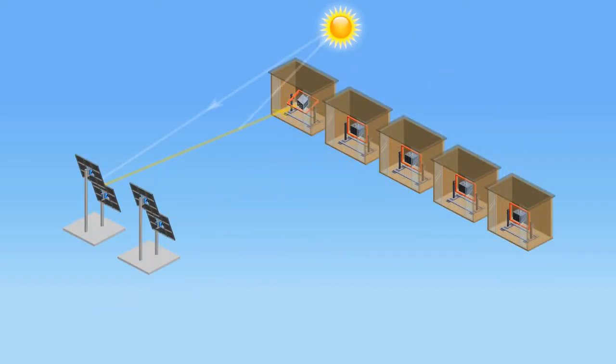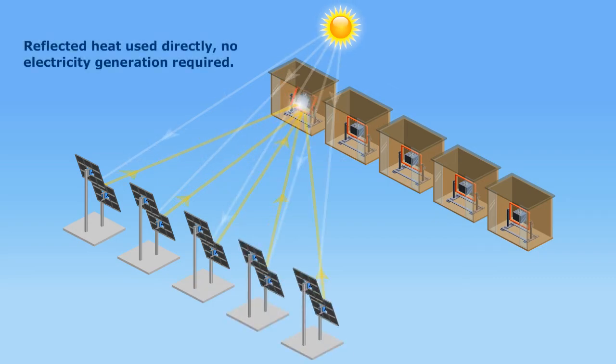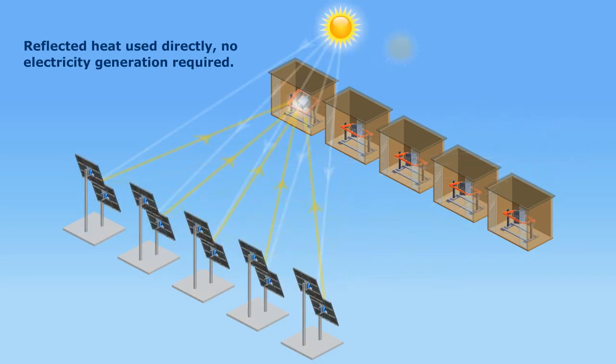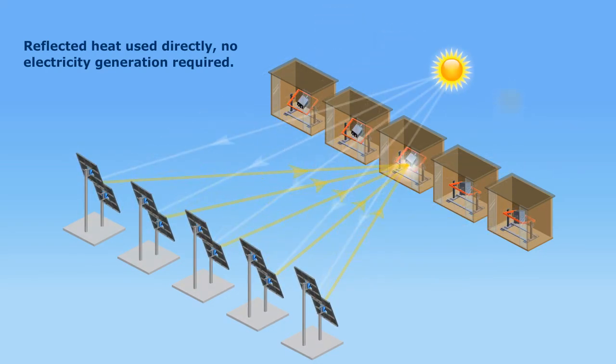A group of heliostats can work together to create a powerful, controllable heat source for rotational molding - free, clean, unlimited energy directly from the sun.